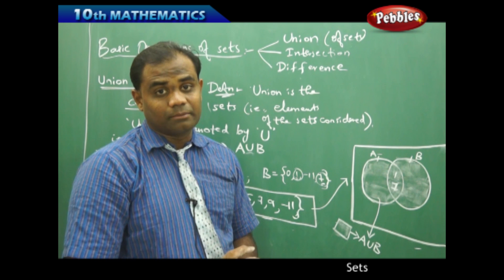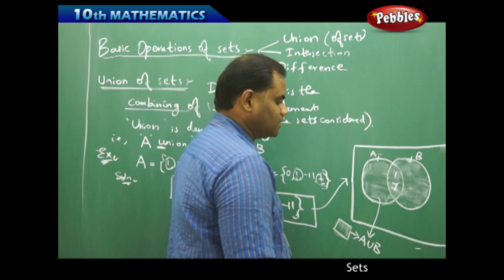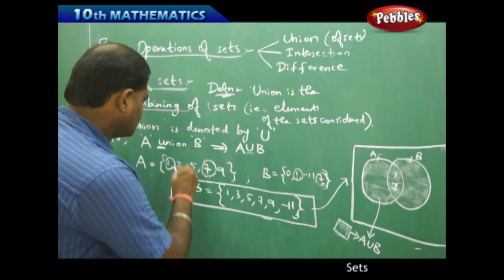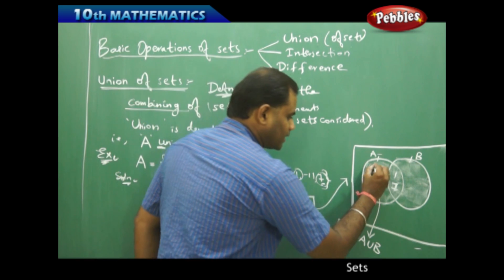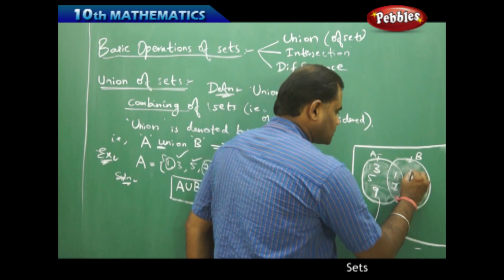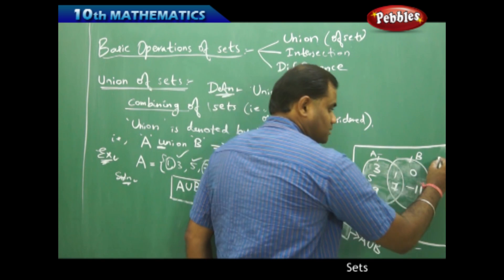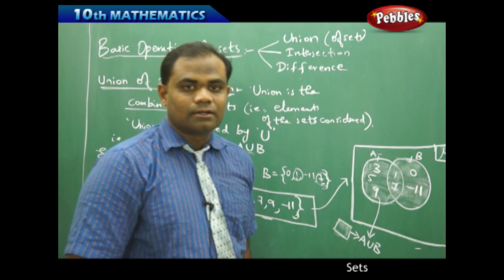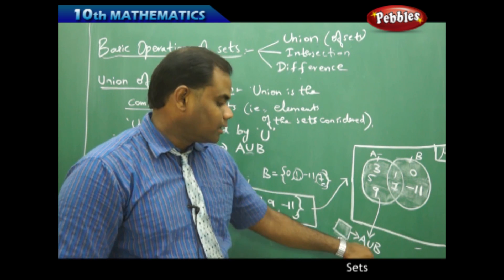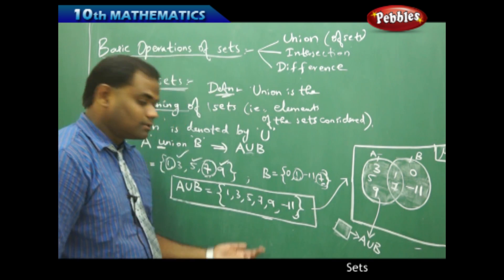That is the first rule in Venn diagrammatic representation: common elements go in the overlapping region. The second rule: remaining elements of each set go in their respective non-overlapping regions. So A ∪ B in the Venn diagram is the entire shaded region covering both circles, with the universal set enclosing everything. All elements — 1, 3, 5, 7, 9, and -11 — are filled in the shaded region A ∪ B. The algebraic representation and the Venn diagrammatic representation both confirm the same result.